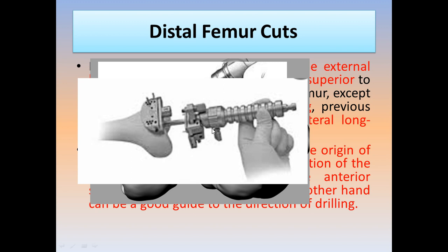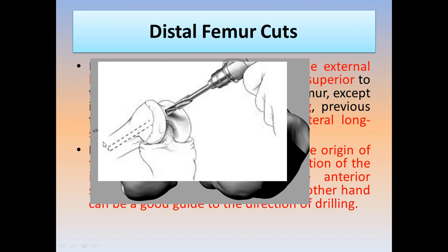After opening the medullary canal, place your guide distally and the entire system goes down the femur. You will cut the distal femur, anterior femur, posterior femur, anterior chamfer, posterior chamfer, and the box. We start with the distal femoral cut.